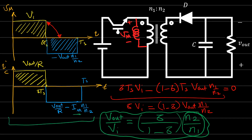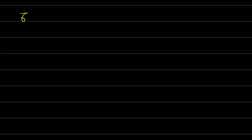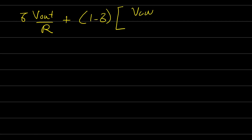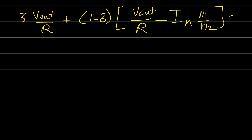We can use the capacitor current relationship to find the magnetizing inductance current. From the capacitor current balance: δ·(V_out/R) + (1−δ)·(V_out/R − Im·(N1/N2)) must equal zero in steady state.